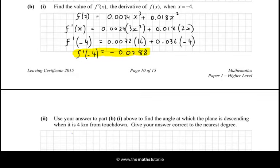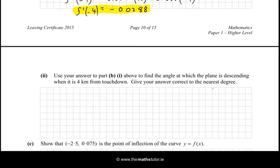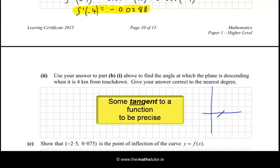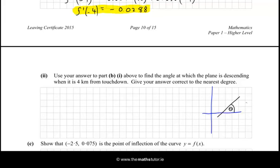Use your answer to part b above to find the angle at which the plane is descending when it is 4km from touchdown. So the tan of the angle is the same as the derivative. Maybe you didn't know that, but the tan that the angle makes with the positive x-axis is always the same as the derivative. So if you have an x and y axis like this, and if you have some function, let's say it's like this, then tan of that will give you the same thing as the derivative.